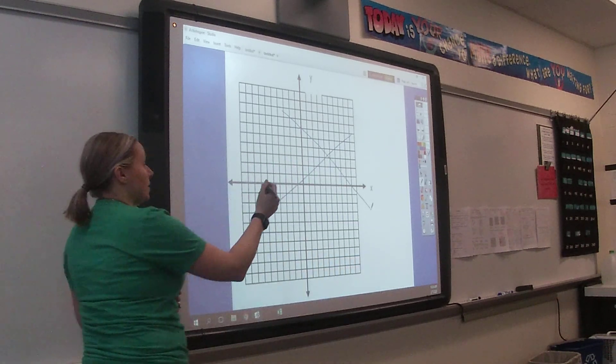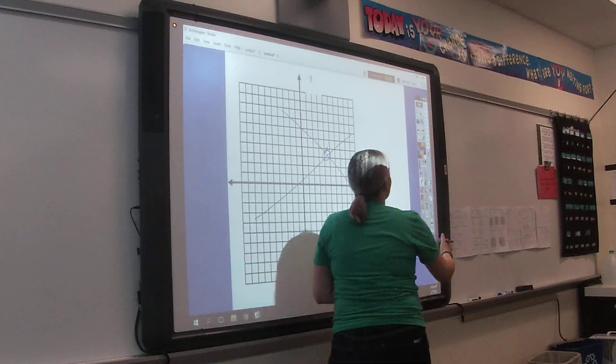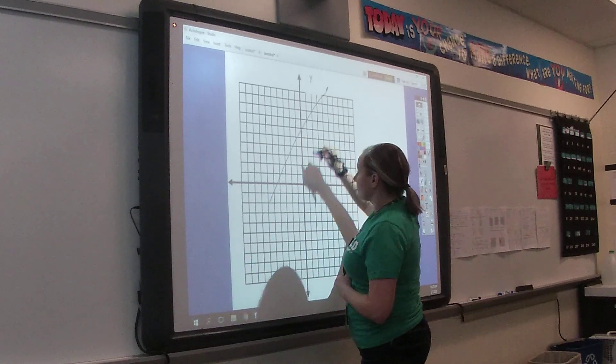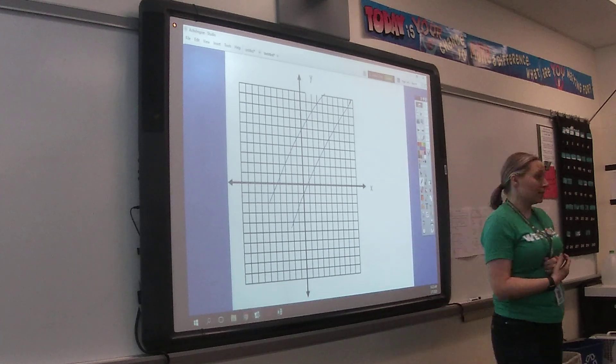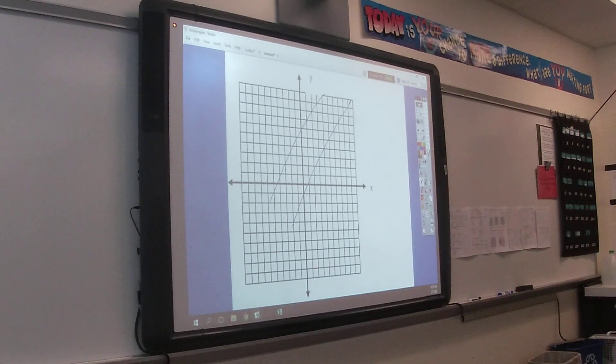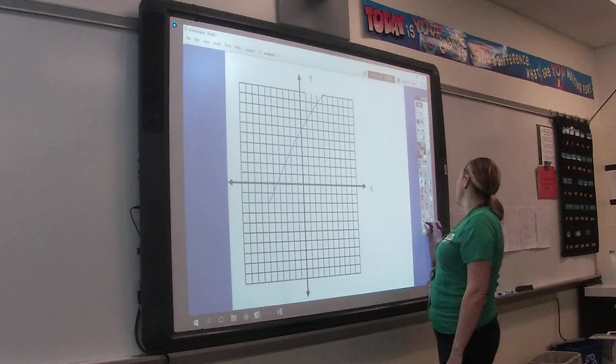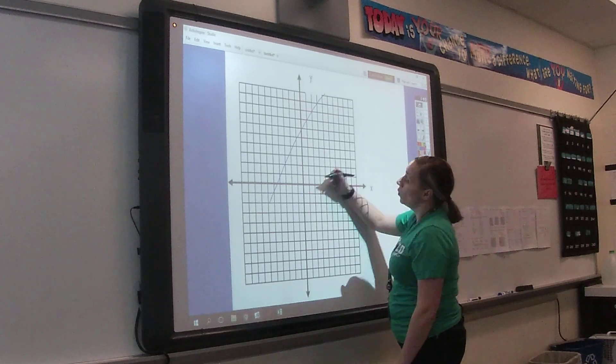If we graph and we get the same line, what do we say our answer is? What is our solution if we graph and we get intersecting lines? The point. We would name this point. If we graph and we get parallel lines, what is our answer?